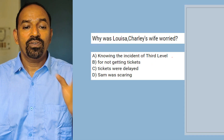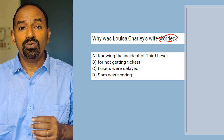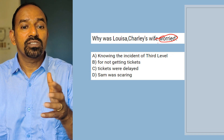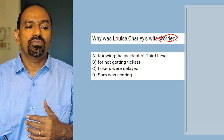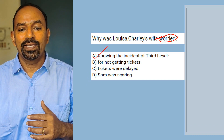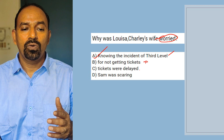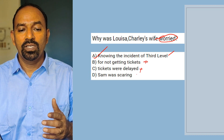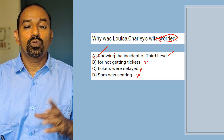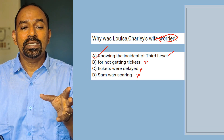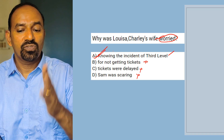Next question: Why was Louisa, Charlie's wife, worried? Options: knowing the incident of the third level; for not getting the tickets; tickets were delayed; something was scaring her. The real answer is knowing the incident at the third level — that was the reason for Louisa's worry.